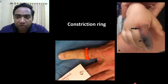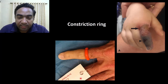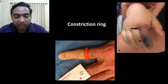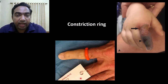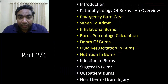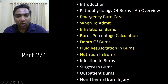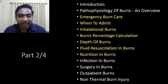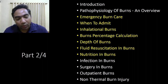Burns can also produce an eschar that acts like a constriction ring, reducing blood supply and causing gangrene of the distal extremity — whether the finger, hand, arm, or leg. In the next part, we will discuss emergency burn care, when to admit burns patients, inhalational burns, calculation of percentage of burns, depth of burns, fluid resuscitation in burns, and nutrition in burns.